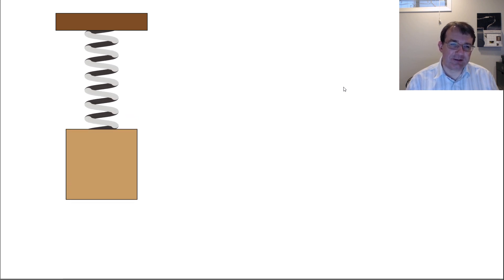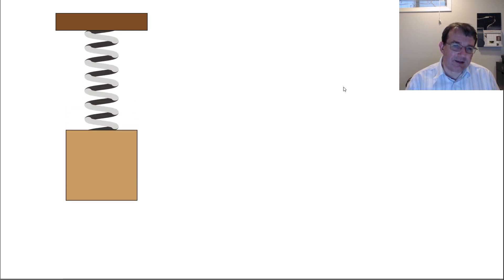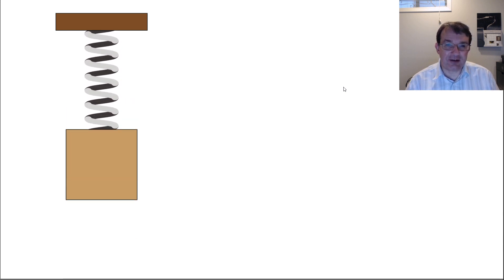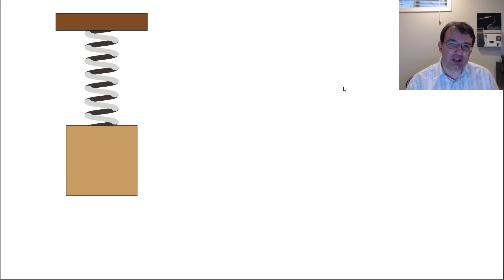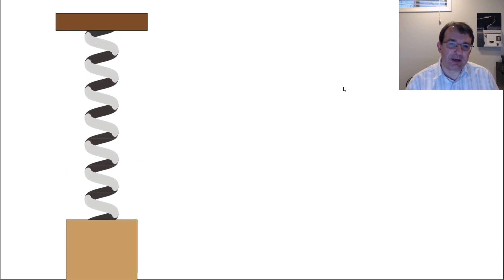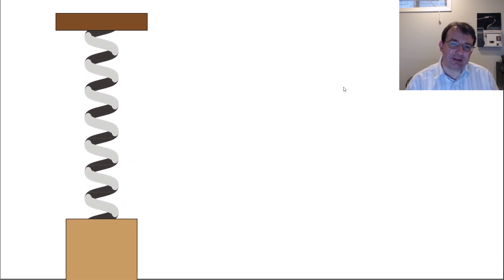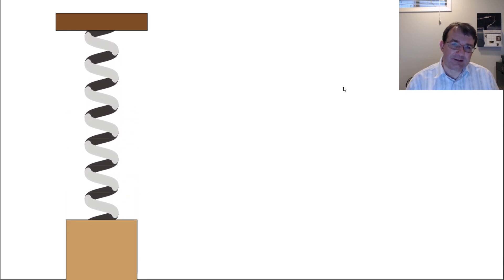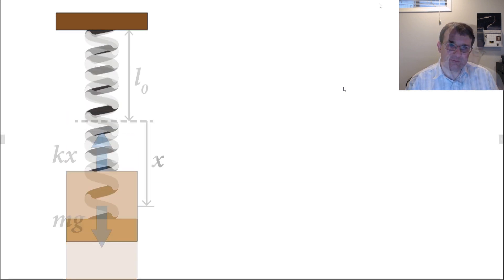We have an idealized vertical mass-spring system oscillating up and down. When we dealt with the horizontal mass-spring system, we looked at the forces acting on the mass, applied Newton's second law, and that gave us an equation of motion — a differential equation. When we solved that, we ended up with a mathematical expression for the displacement of the mass as a function of time. Let's take exactly the same approach with our vertical mass-spring system.